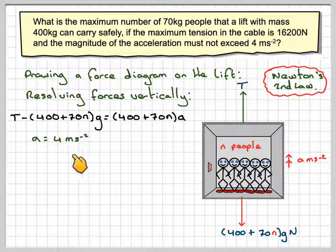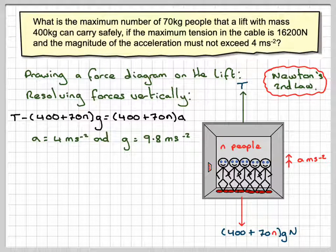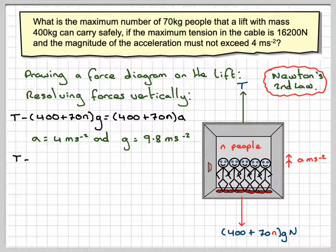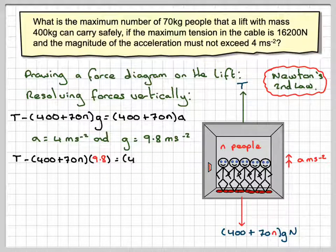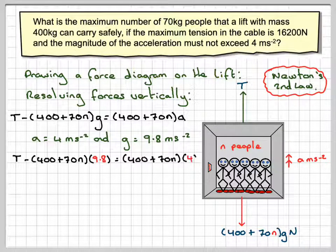If A is 4 meters per second squared and G is taken as 9.8 meters per second squared, substitute in we get T minus 400 plus 70N times 9.8 is equal to 400 plus 70N times 4.